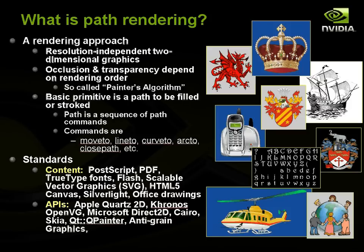There are a bunch of existing APIs for doing path rendering. Apple supports Quartz 2D, now called Core Graphics. Khronos has an API called OpenVG. Microsoft has a Direct2D API. There are also several open source APIs like Cairo, Skia, Qt, and the Antigrain Geometry system.